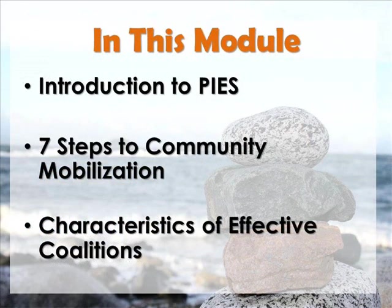During this module, we will address the importance of mobilizing our communities. We will open by introducing the PIES framework, which provides structure for many aspects of primary prevention. Then we will go over the seven steps to community mobilization, and finally highlight how we can develop effective partnerships and go over different characteristics to ensure the success of our coalition's efforts.